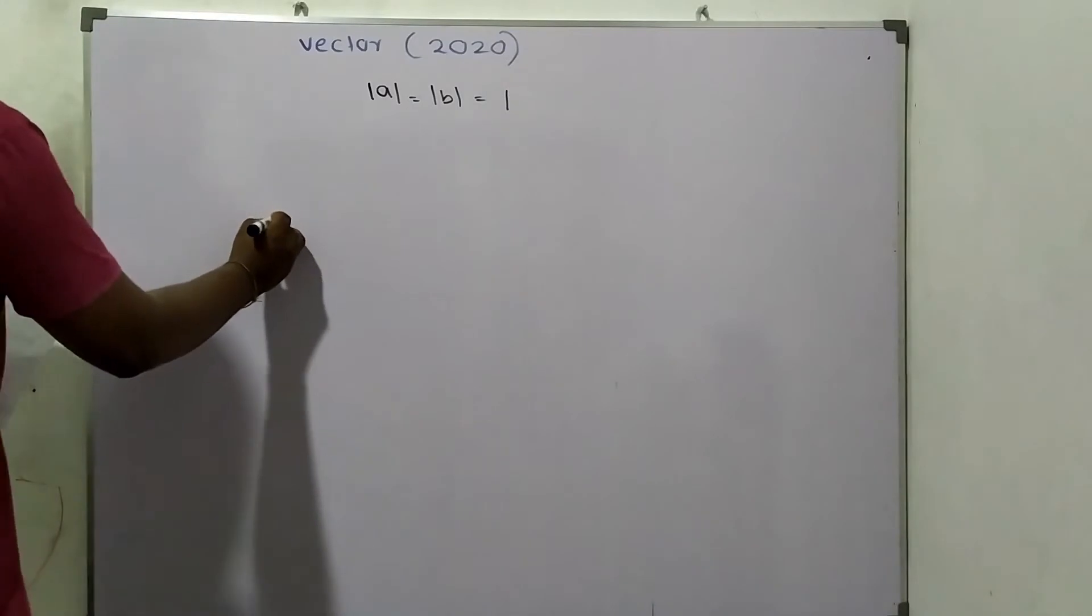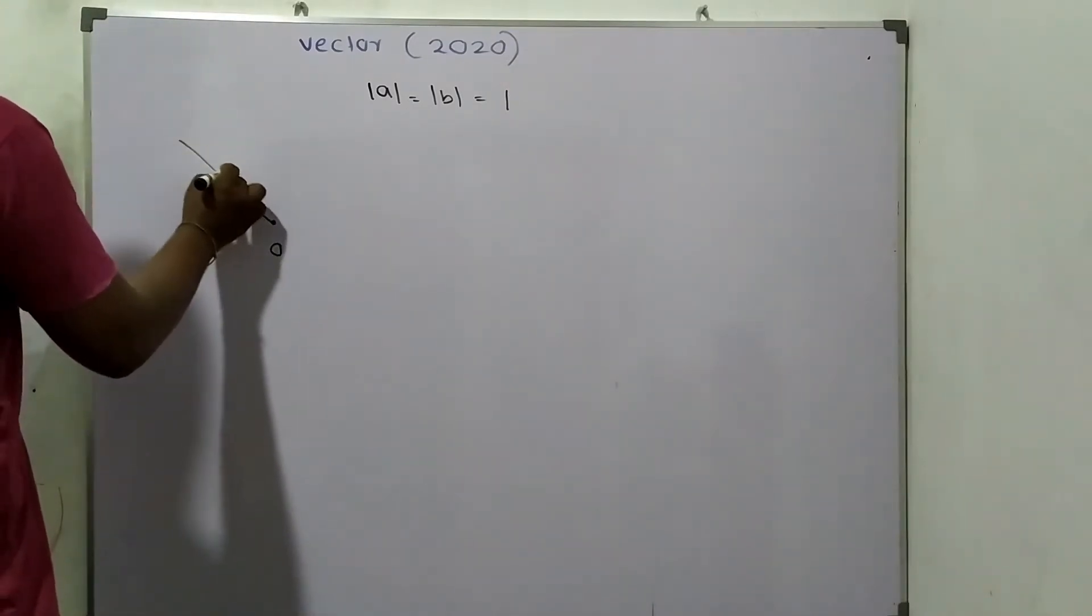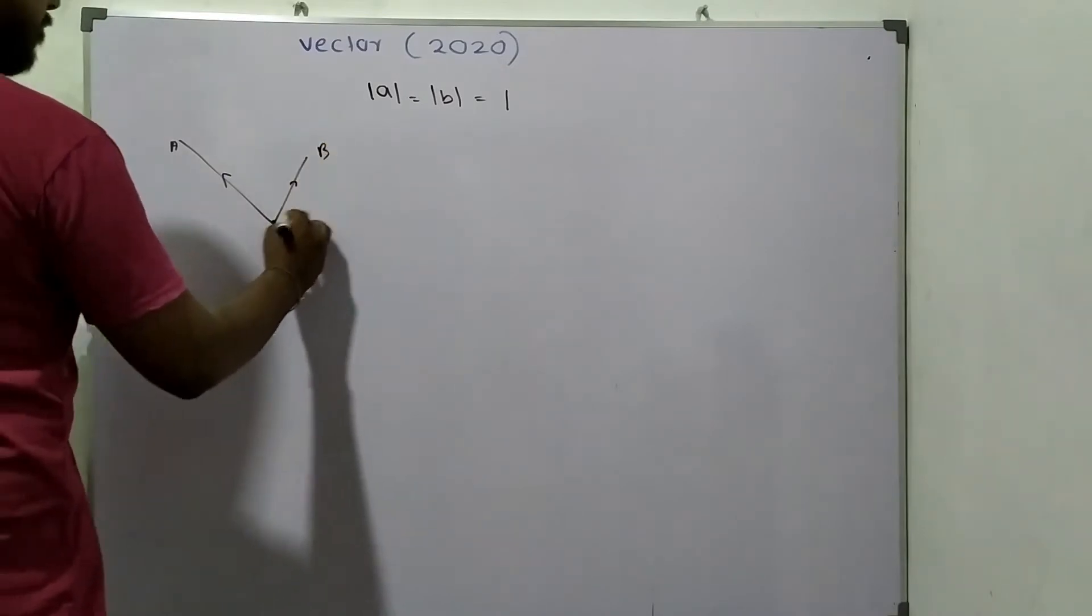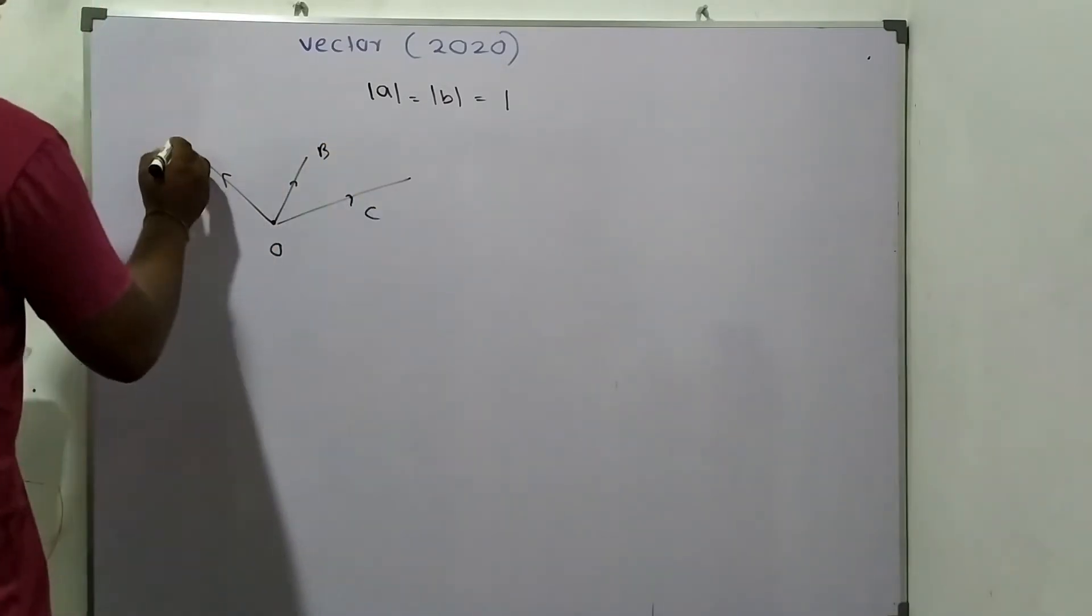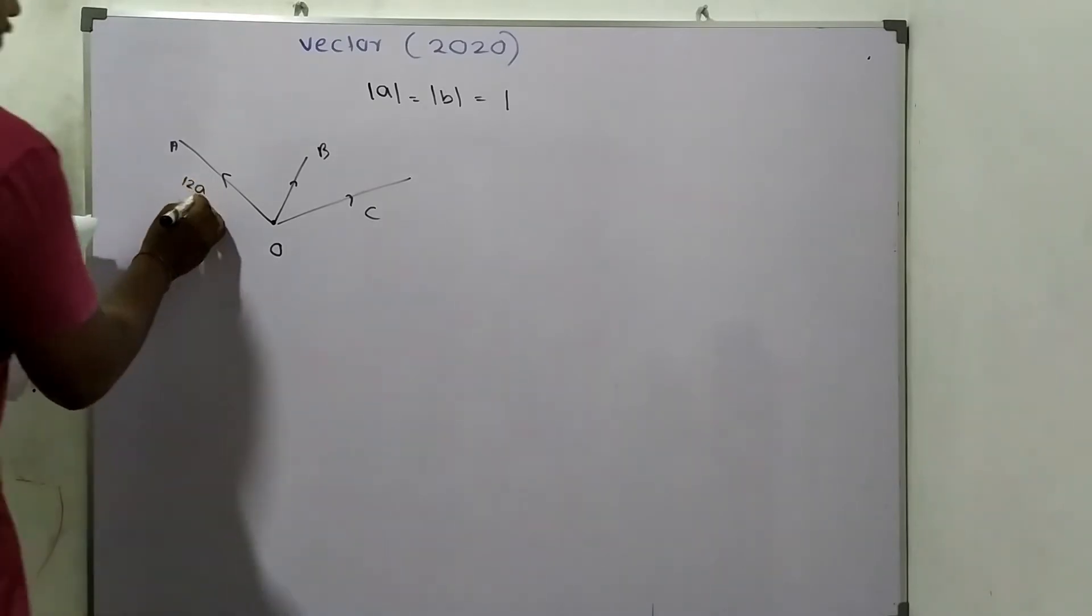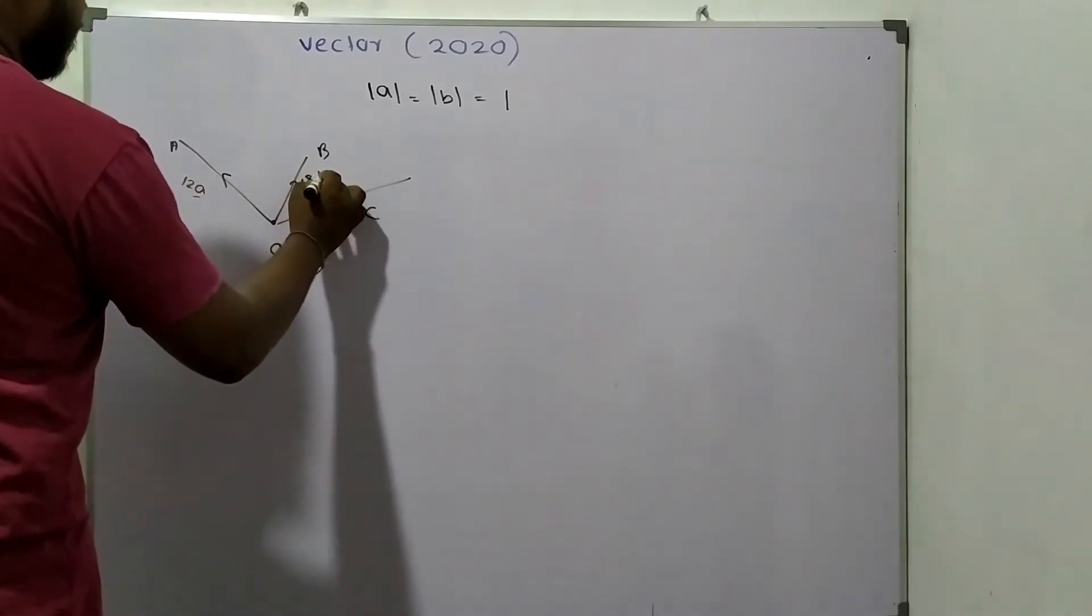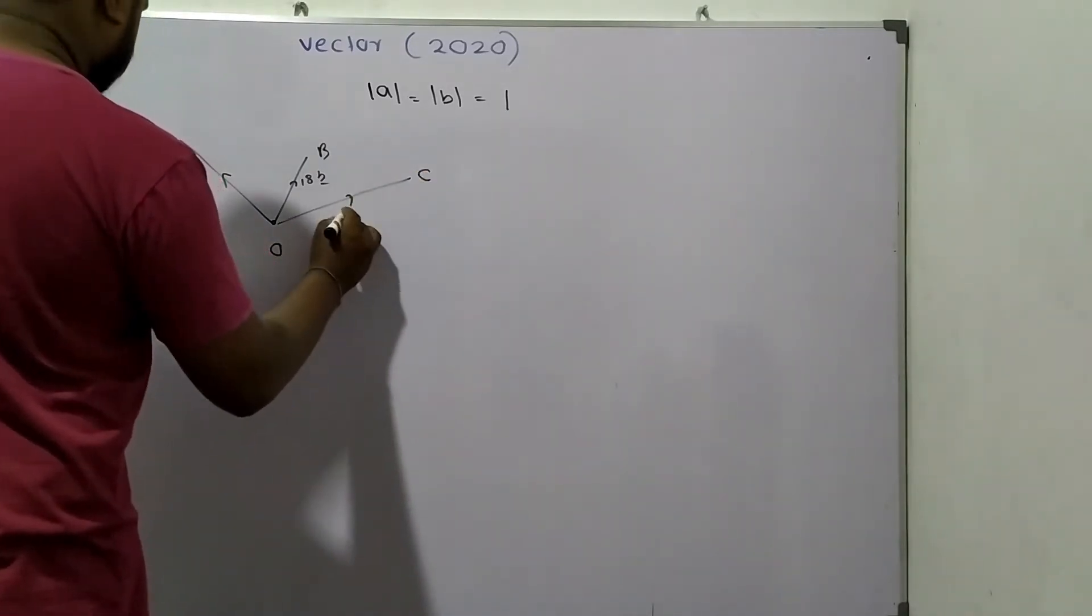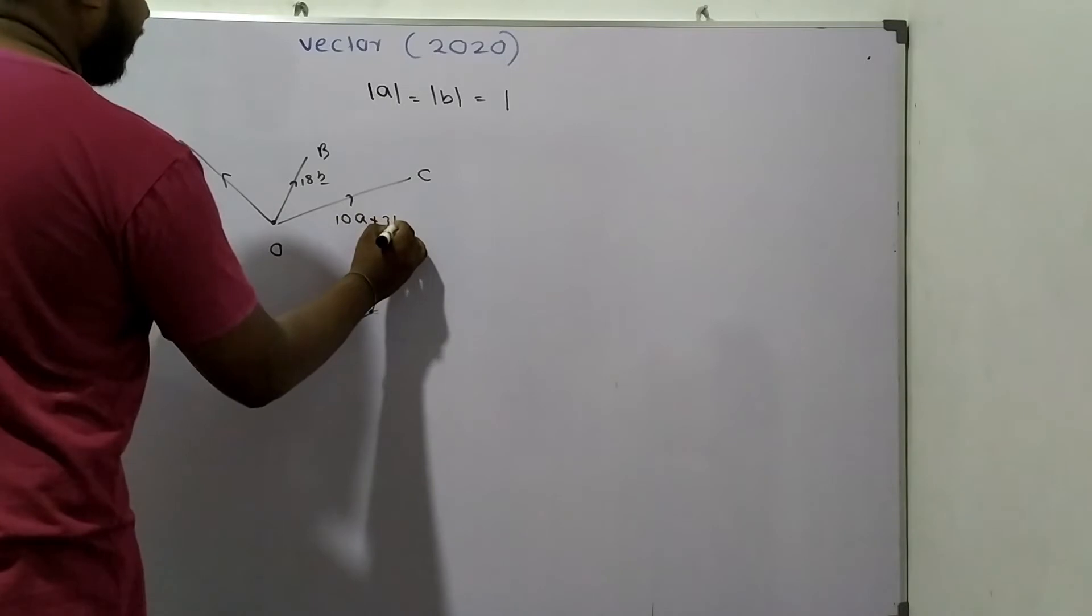The position vectors of A, B, C are 12A, 18B, and 10A plus 3B respectively.